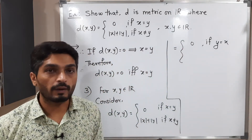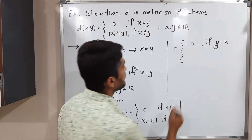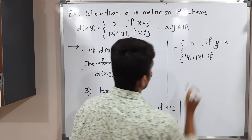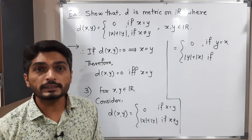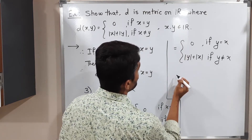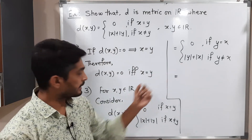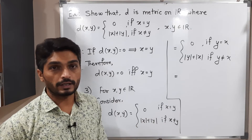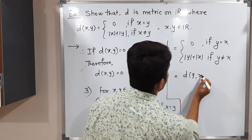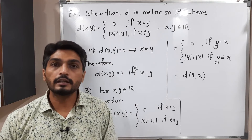Also, |X| + |Y| = |Y| + |X| since addition is commutative. And X ≠ Y is the same as Y ≠ X. So we can write: 0 if Y = X, and |Y| + |X| if Y ≠ X — which is exactly D(Y,X). We started with D(X,Y) and arrived at D(Y,X). Therefore D satisfies the third condition.